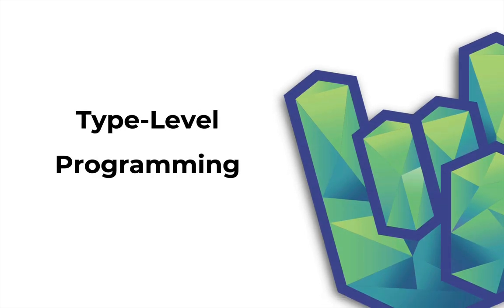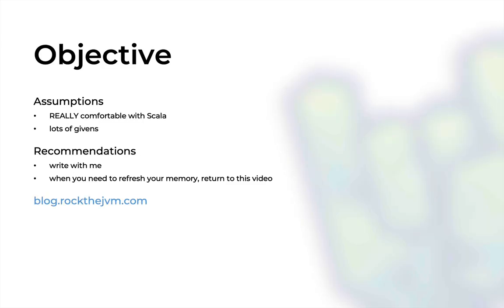Daniel here for Rock the JVM, and this is a long overdue video on type-level programming in Scala 3. In this video we're going to sort types at compile time by making the compiler synthesize given values for us.